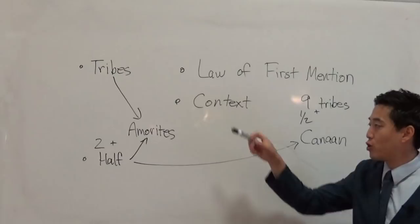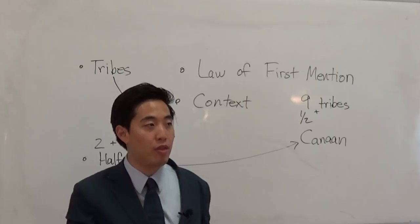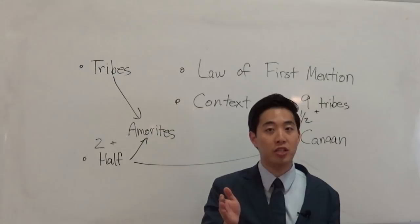So that's why you notice that the law of first mention in context will be very important. It's going to make things more clear. So that could be the reason why. That's why it would mention half tribe of Manasseh. Because literally half of them want to stay with Amorites, the other half wanted Canaan. All right, so hopefully that'll answer your question.